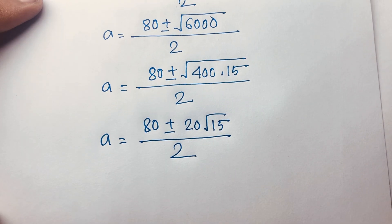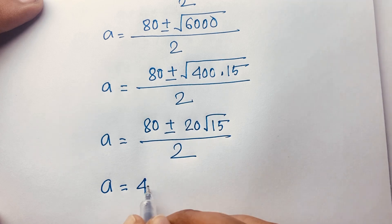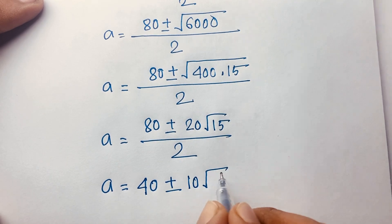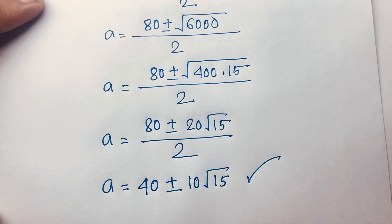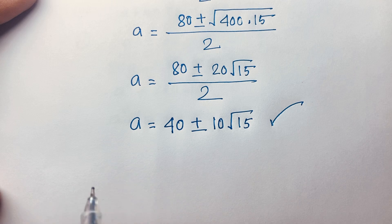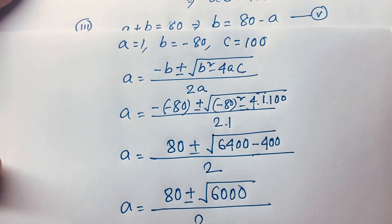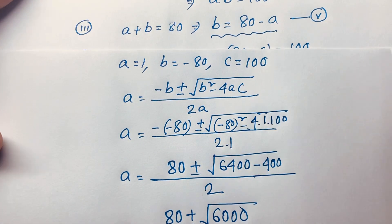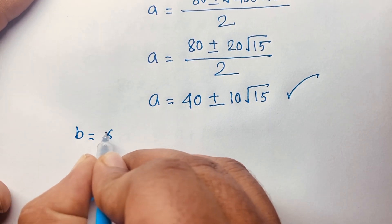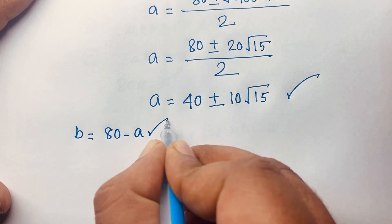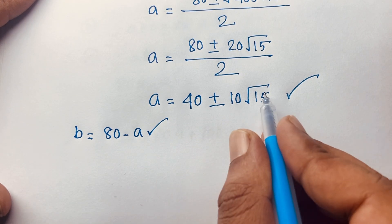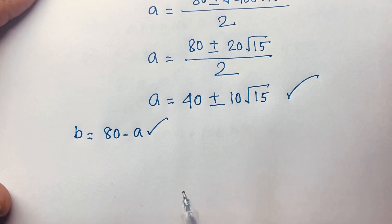Since 6000 equals 400 times 15, we have √6000 equals √400 · √15 equals 20√15. Separating the fraction: a equals 40 ± 10√15. This is the value of a. Now we know that b equals 80 minus a, so we take this equation to find b.